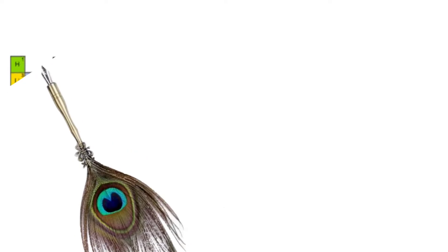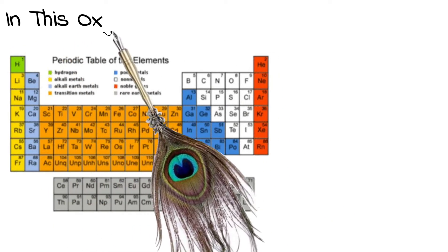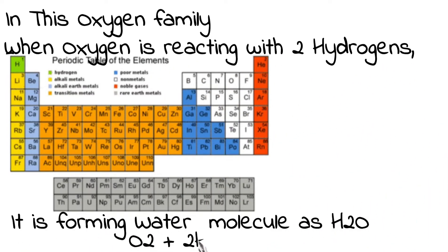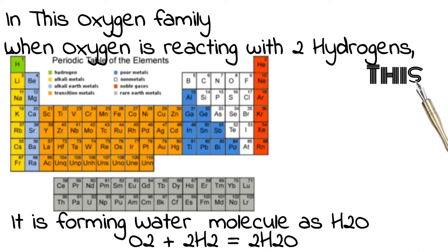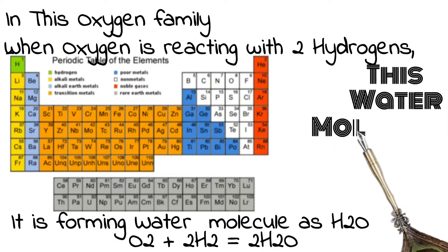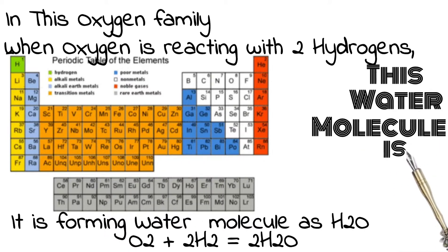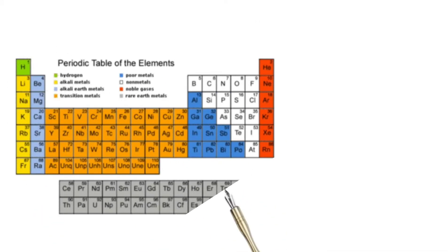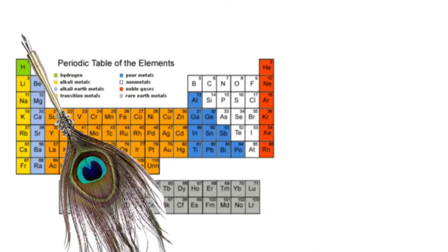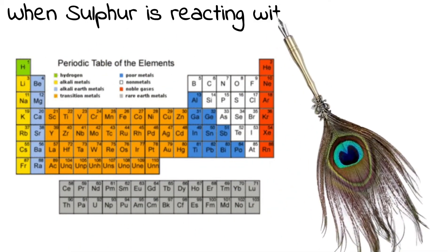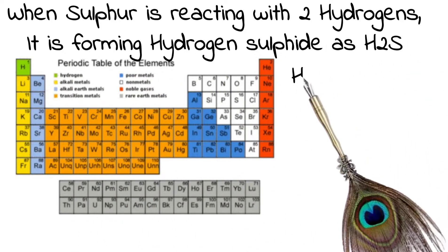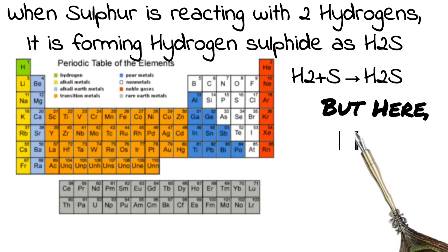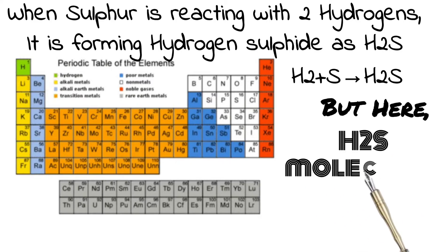In this oxygen family, when oxygen reacts with two hydrogens, it forms water as H2O — and this water molecule is in a liquid state. Now, when sulfur reacts with two hydrogens, it forms hydrogen sulfide as H2S, which is in a gaseous state.